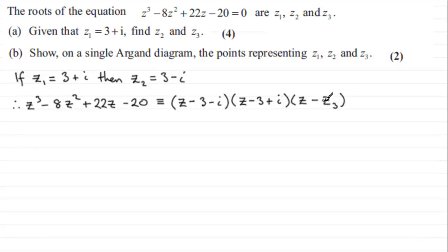Now, we've got to find out what z3 is. And the way we can do this is to expand out these two brackets and then compare our result to what we have here, knowing that z3 must be a real number. Okay? So let's just expand these two brackets.